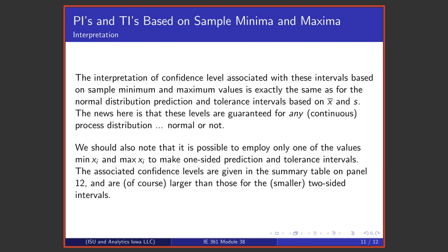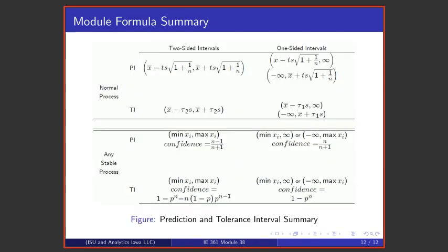Here is a set of summary formulas for this material. You can find the material in Vardaman and Jobe. Here are two-sided intervals and one-sided intervals. These are prediction intervals and tolerance intervals based on a normal assumption. Here are prediction intervals and tolerance intervals based on any stable process assumption using extreme values in the sample.